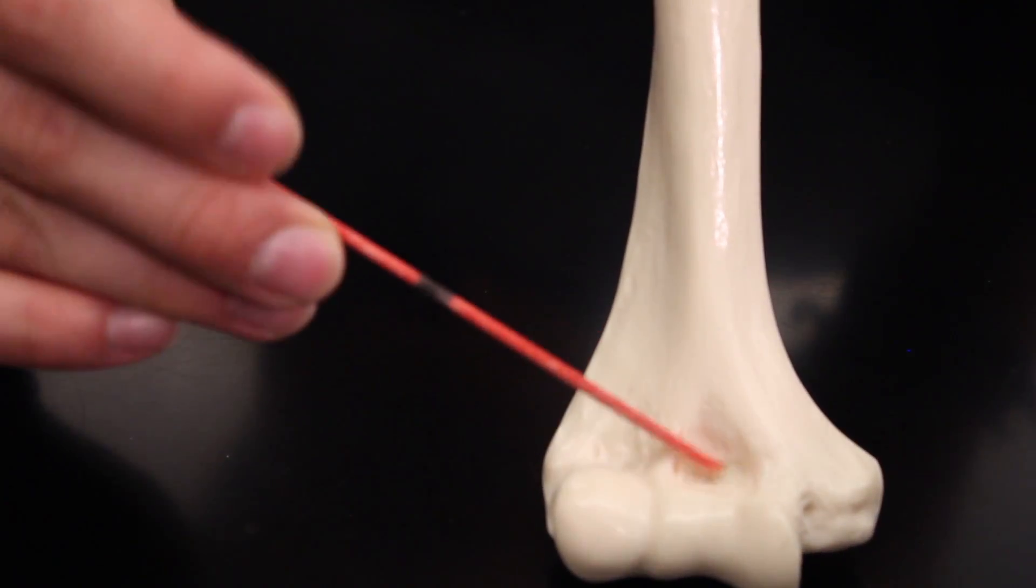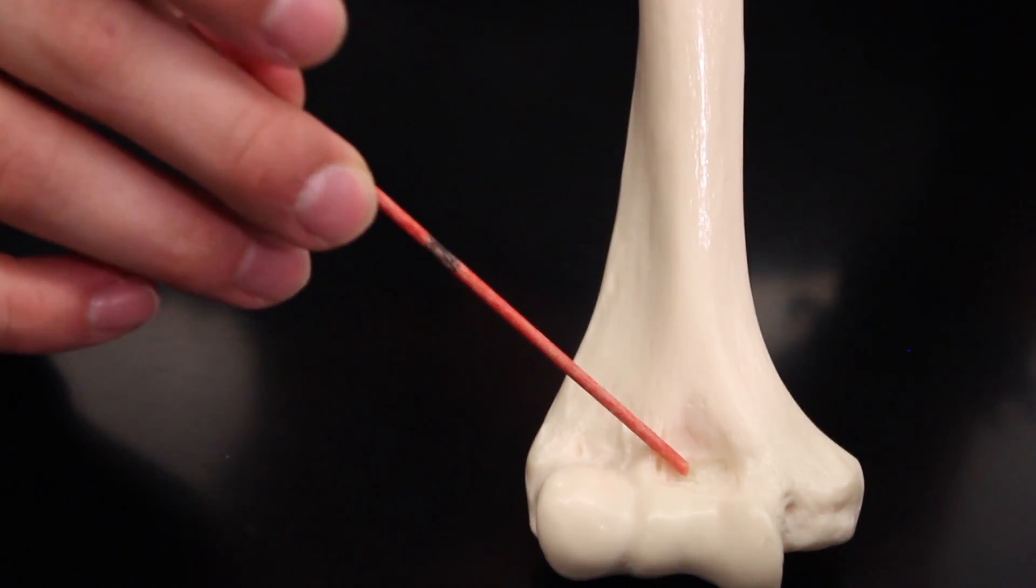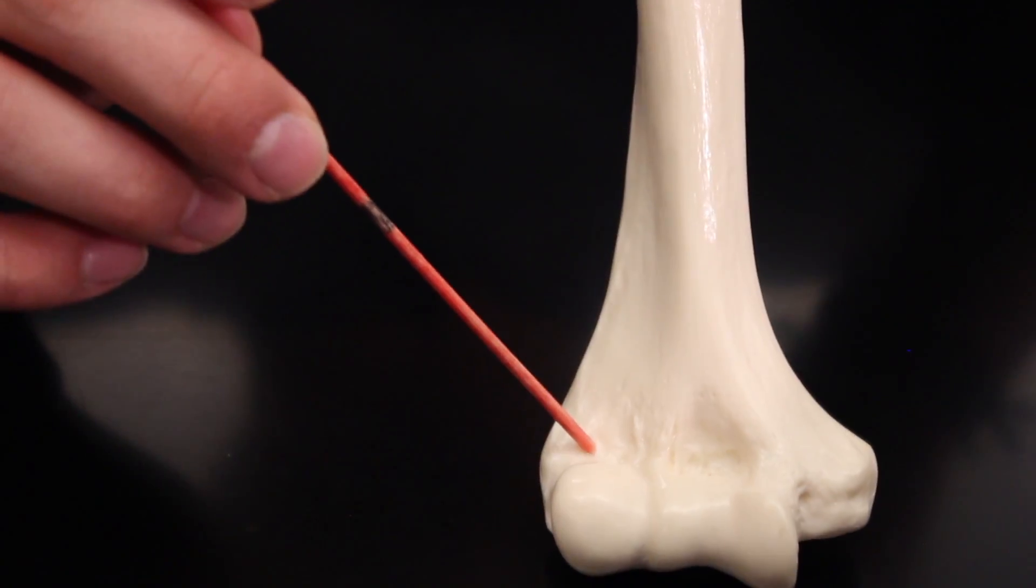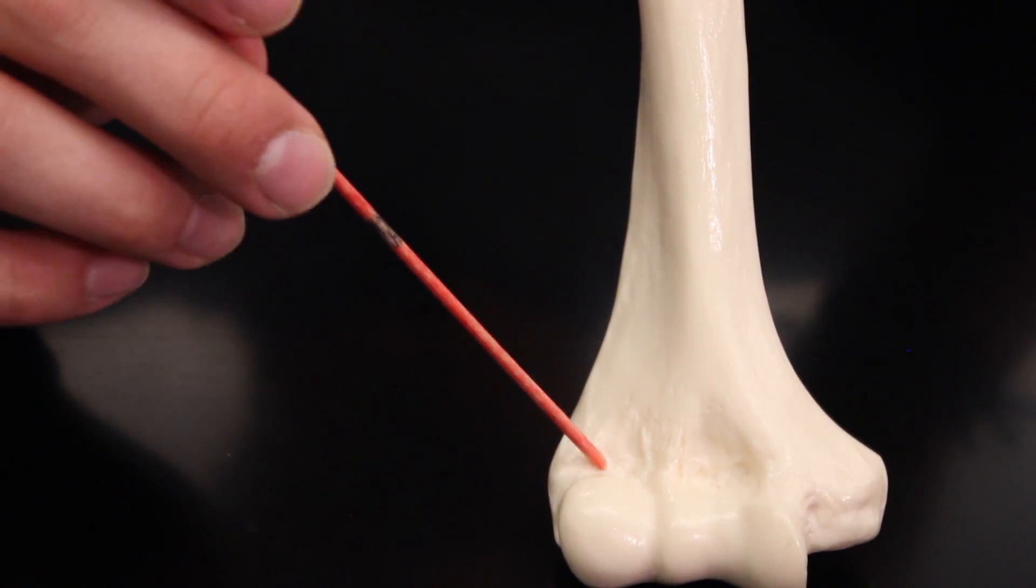This right here is actually going to be called the coronoid fossa, it's where the coronoid process of the ulna inserts, it forms that little depression there. Here's the radial fossa right there, and the radial fossa is actually caused by the head of the radius which causes that depression.